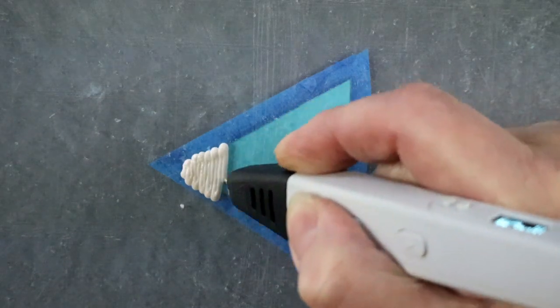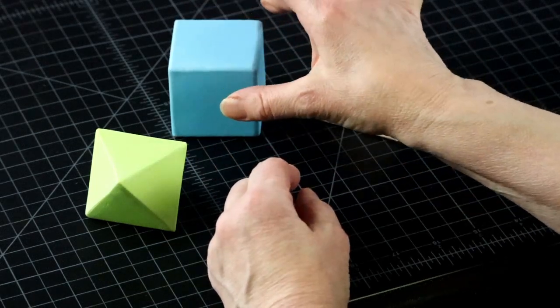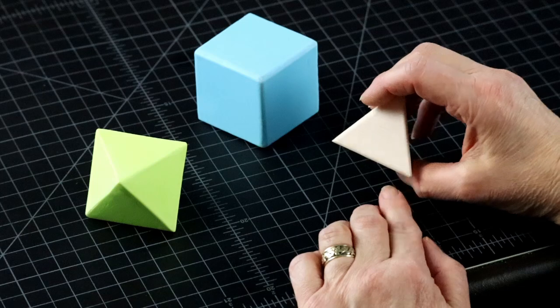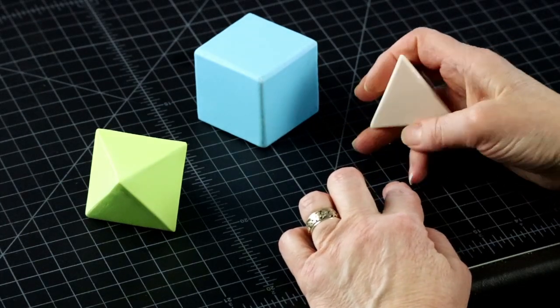When you make shapes with 3D pen, the ones with right angles, like the cube, are always easier to make than let's say tetrahedron, which is full of sharp corners.